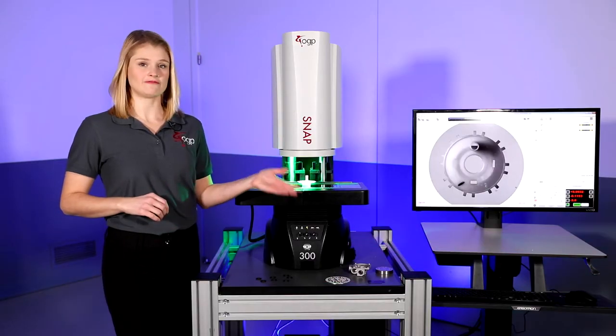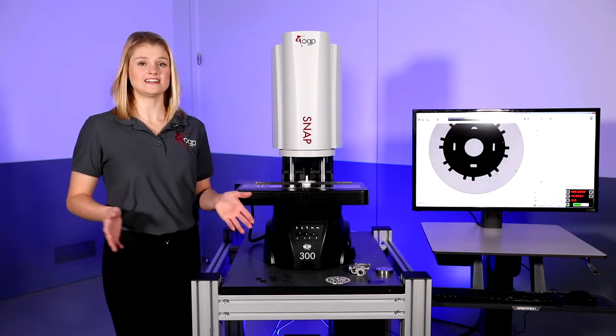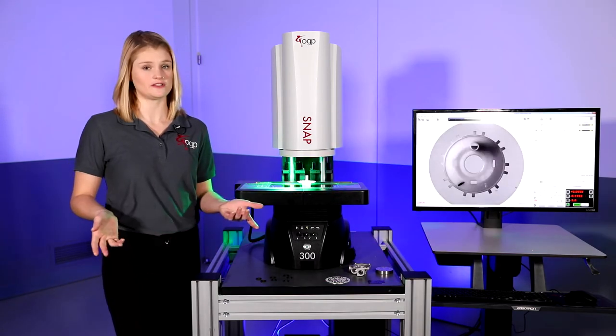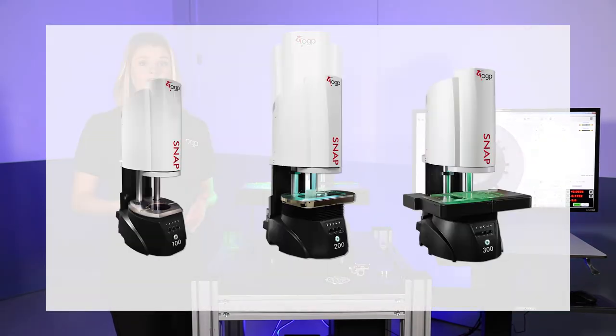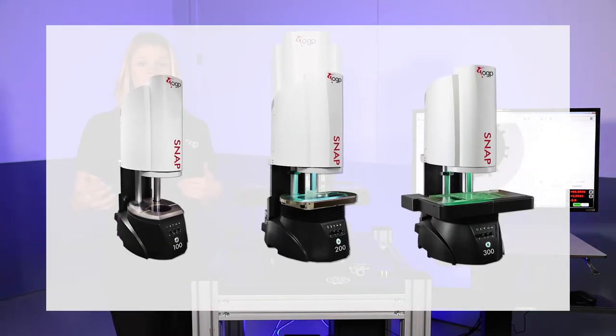This machine here is a SNAP 300, which offers an extended X and Y measuring range to handle a variety of parts. SNAP systems are offered in multiple sizes to suit a wide range of measurement needs.